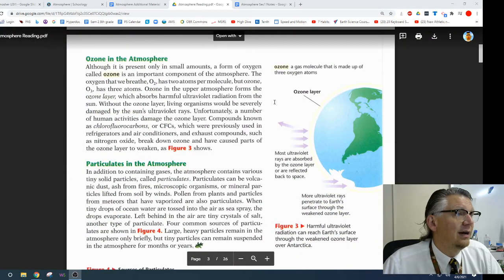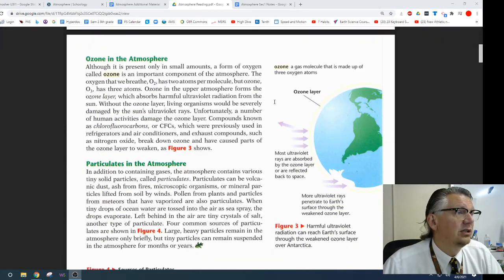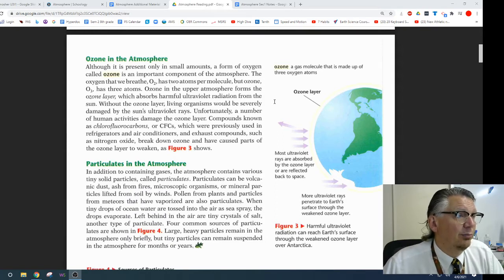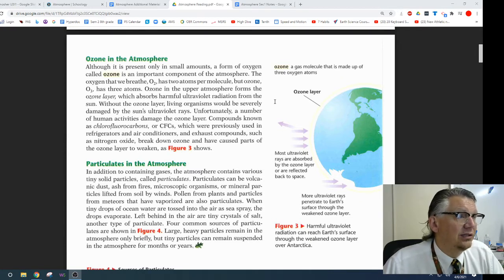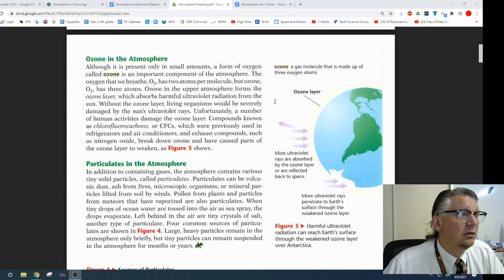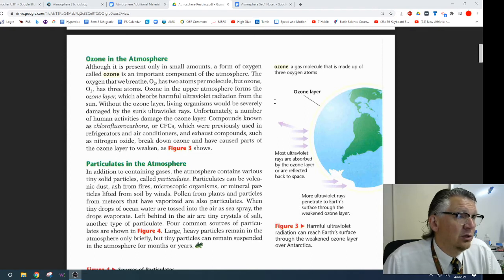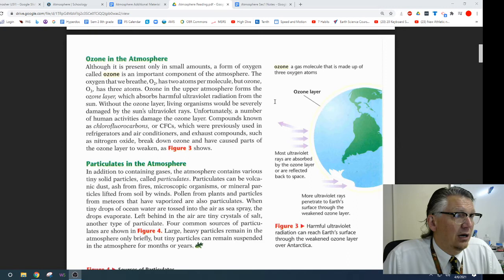Ozone in the atmosphere. Although it is present only in small amounts, a form of oxygen called ozone is an important component of the atmosphere. The oxygen that we breathe, O2, has 2 atoms per molecule. But ozone, O3, has 3 atoms. Ozone in the upper atmosphere forms the ozone layer, which absorbs harmful ultraviolet radiation from the sun.